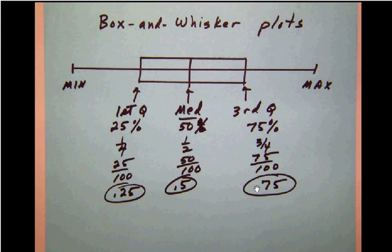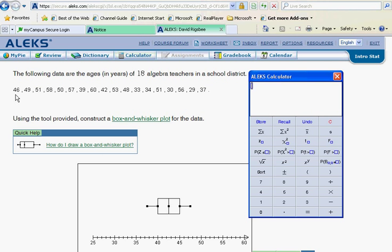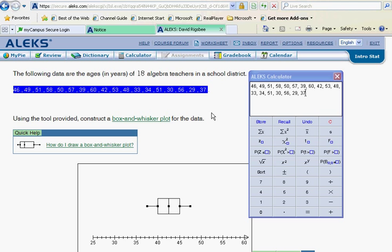So let's set about doing the minimum and maximum. First thing we'll do is go back to our list. We will grab our numbers, pull them into the ALEKS calculator, and sort them as we did before. So we'll get those sorted. Notice right away, the minimum is 29, the maximum is 60, so we can go ahead and we can add that to our box whisker diagram.